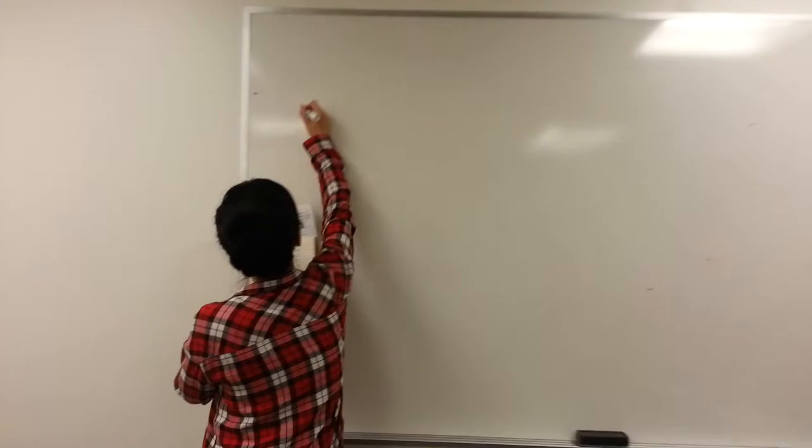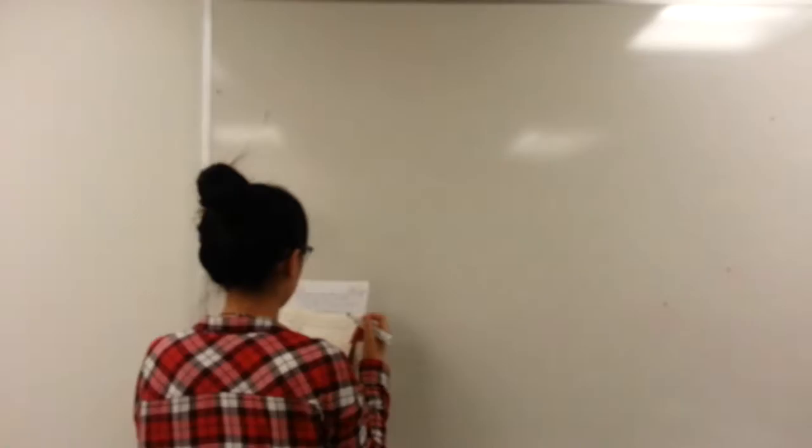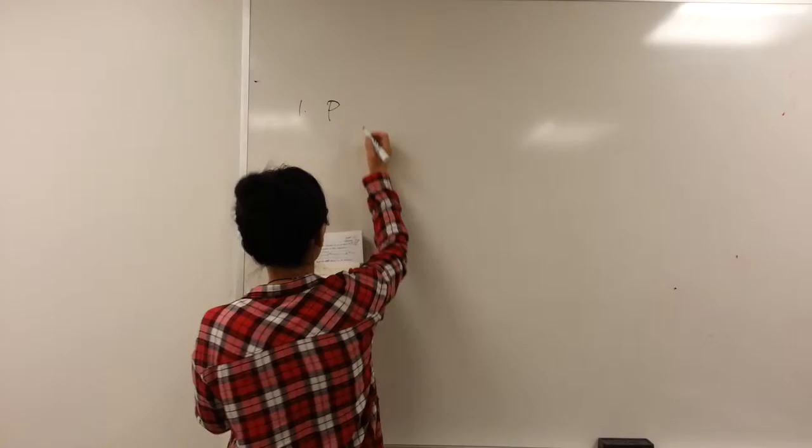Hi, this is my first question. According to the topic, the number of customer arrivals from 0 to t follows a Poisson process.